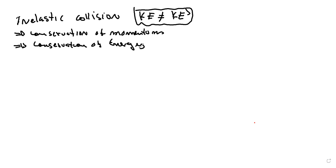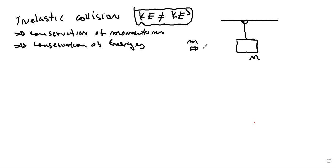The problem is the following. We have a ceiling, and hanging from it is a block of wood with mass big M. We fire a bullet with mass little m at the block. The bullet hits the block and stays inside it, and together they swing this way.